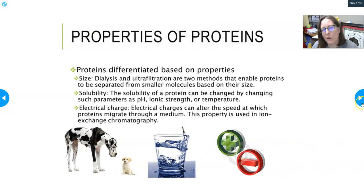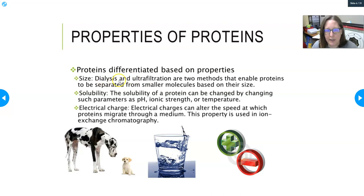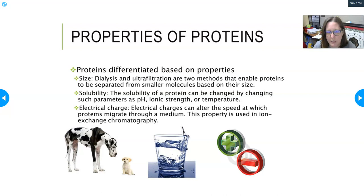Proteins can be differentiated based on their properties. Based on size — smaller versus larger molecules — you can use dialysis and ultrafiltration to separate proteins from smaller molecules. Solubility can be changed by altering the pH, ionic strength, or temperature of the solution. Electrical charge can alter the speed at which a protein migrates through a medium — that's used in electrophoresis and ion exchange chromatography.